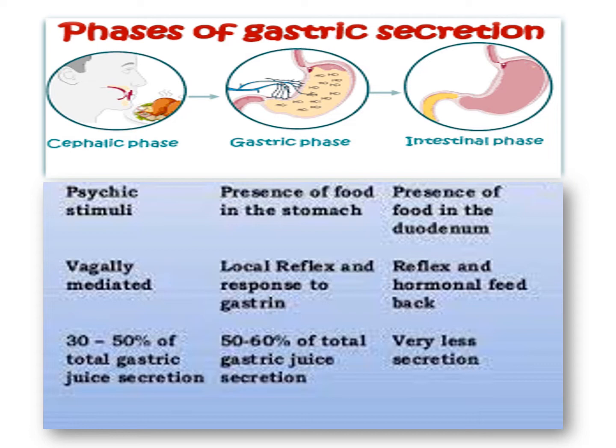The cephalic phase accounts for a shorter period of time and occurs mainly due to psychic stimuli. Seeing, tasting, or smelling food stimulates the vagal nervous system, leading to 30 to 50% of total gastric acid production. After that, when food enters the stomach, it causes distension, and along with undigested proteins, leads to further gastric acid production. This gastric phase lasts 3 to 4 hours and is the main phase of gastric secretion, accounting for 50 to 60% of gastric acid secretion.